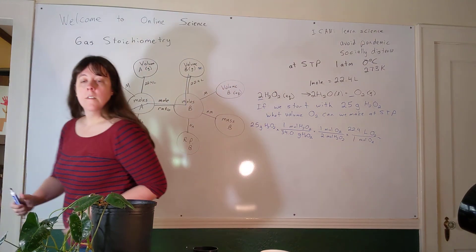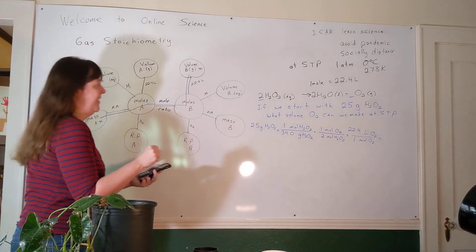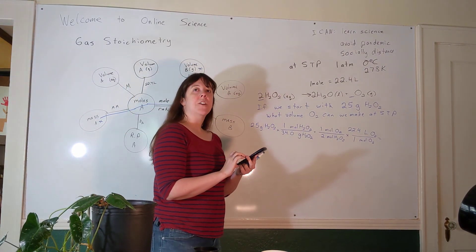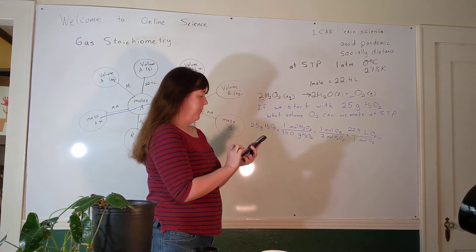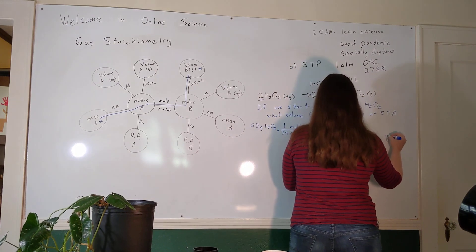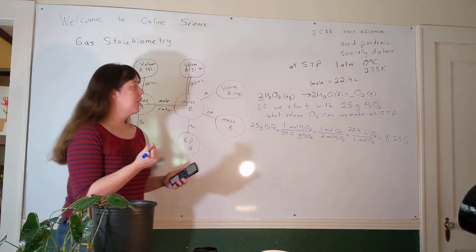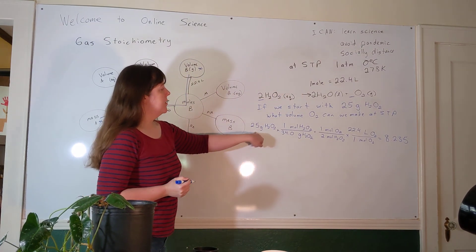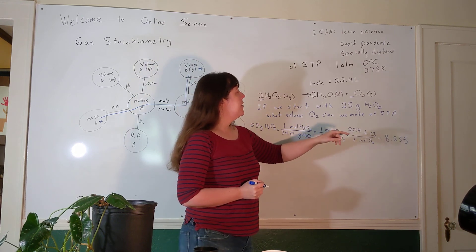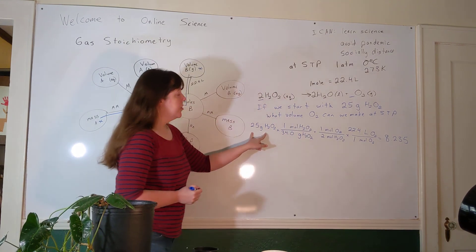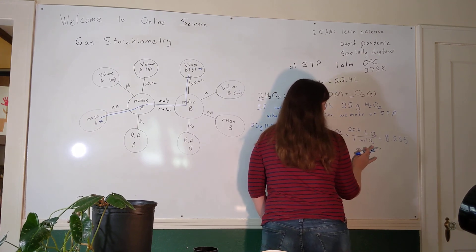Now we're ready for a calculator. While I'm typing this in, your secret question for today is: what's your favorite candy, Easter candy or otherwise? 25 divided by 34 divided by 2 times 22.4 gives me 8.235. Are we done? No, we're not done. We have to be sure: how many sig figs should this answer have? We have two in the mass, three in our molar mass. The mole ratio is an exact number so we ignore it for sig fig purposes, and 22.4 has three significant figures. Our first number is going to limit our sig figs. We'll keep the 8 and the 2. After the 2 is a 3, so it doesn't round up.